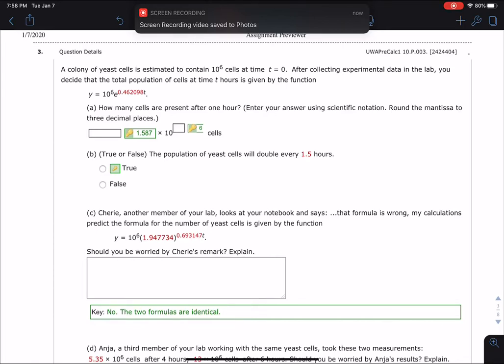Okay, last problem we're going to do tonight says how many cells are present after one hour? So this is pretty easy, right? We have y equals 10 to the 6th times e raised to the 0.462098. And we want to know after one hour.